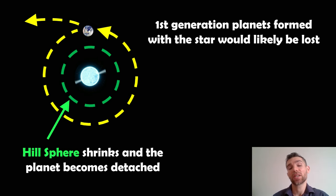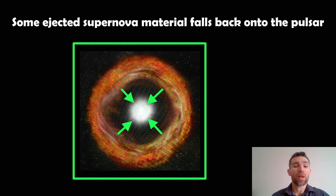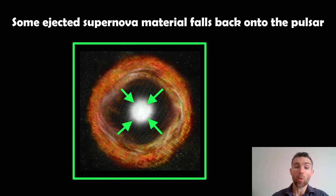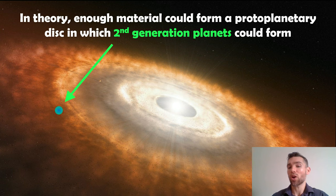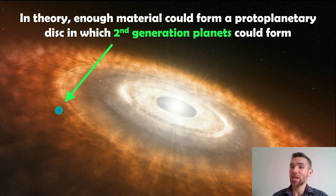Second-generation planets could potentially form around the newly produced pulsar. Some of the ejected supernova material gravitationally falls back down onto the pulsar, producing a disk — similar to a protoplanetary disk that planets initially form in. The only issue is that this disk is quite low mass and small, so there may not be enough material to form a planet. But potentially, in theory, a second-generation planet could form in this disk around the newly formed pulsar.